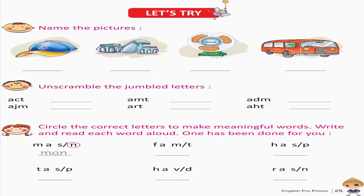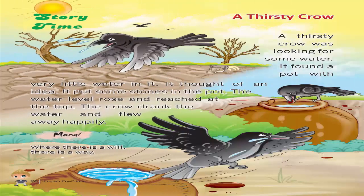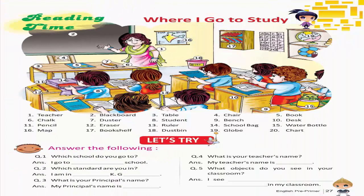Story time — A thirsty crow. A thirsty crow was looking for some water. It found a pot with very little water in it. It thought of an idea. It put some stones in the pot. The water level rose and reached the top. The crow drank the water and flew away happily. Moral: Where there is a will, there is a way.